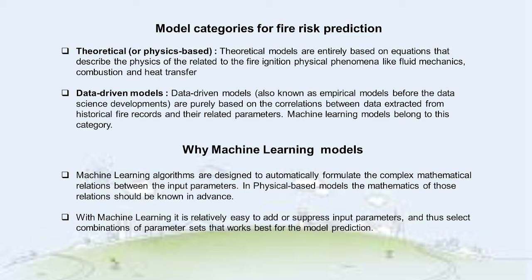Why prefer machine learning models over physics-based? The major reason is that we don't have to know in advance the mathematics of the relations between the model parameters. The machine learning algorithms are designed to automatically formulate any mathematical relations between those parameters. In addition, with machine learning it is not too complicated to add or suppress input parameters and thus detect the combinations that work best.